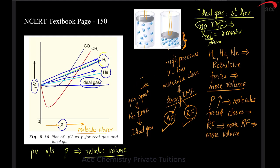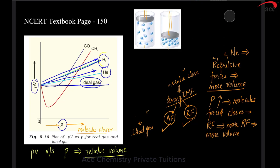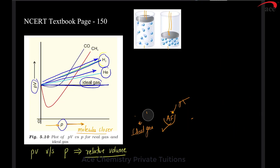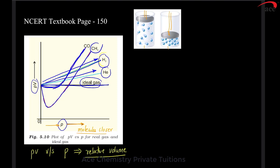If you look at the graph for carbon monoxide and methane, the trend is quite different. First their volumes are low, they become still lower, and then their volume increases and goes higher up — that is what is happening for methane, and similarly for carbon monoxide. Their volume becomes lesser than even ideal gas and then it increases. When their volume becomes lesser, they have attractive forces; when their volume is more, they have repulsive forces.